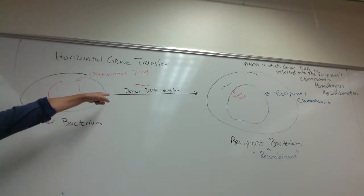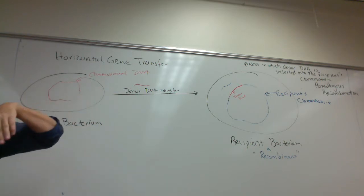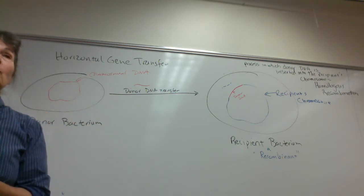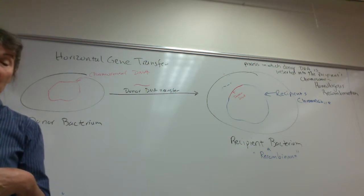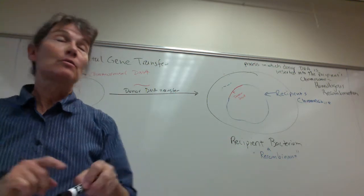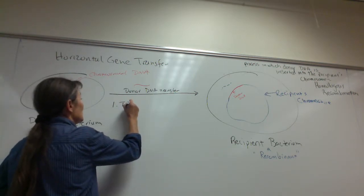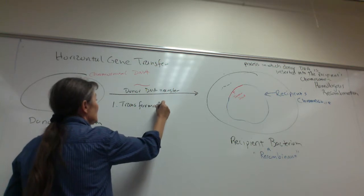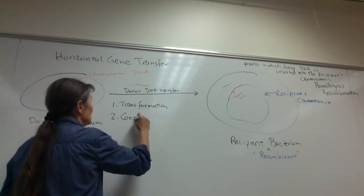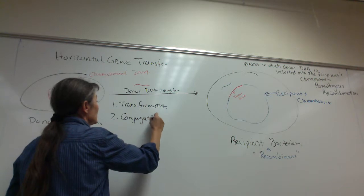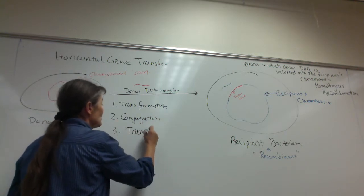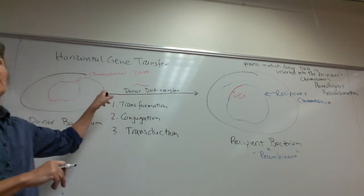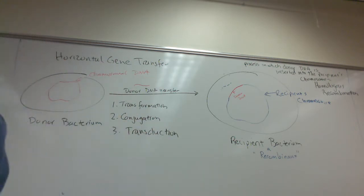There are three different ways bacteria can transfer donor DNA to a recipient — three different ways of horizontal gene transfer. The first is called transformation, the second is conjugation, and the third is transduction.